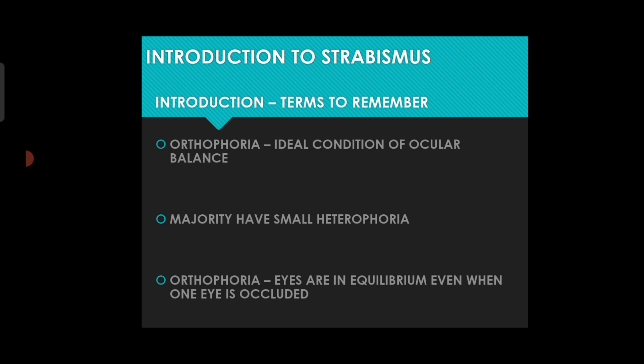When even with the help of the eye muscles we cannot maintain fusion, that is manifest strabismus — a manifest squint.